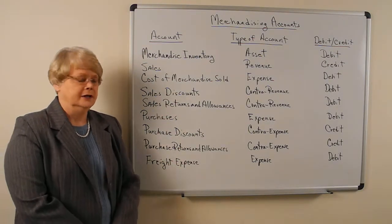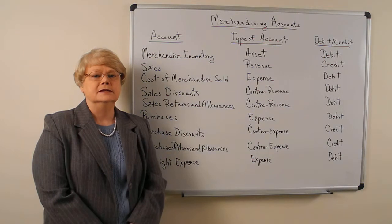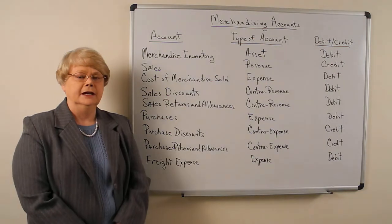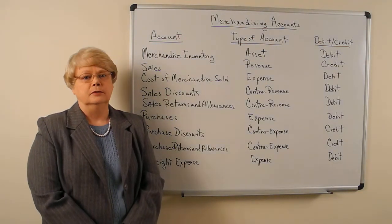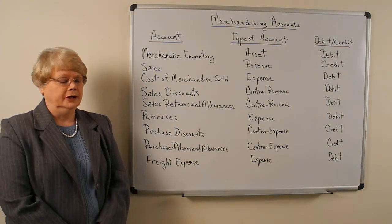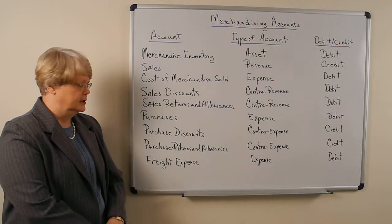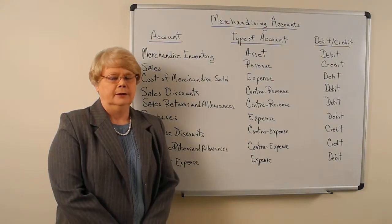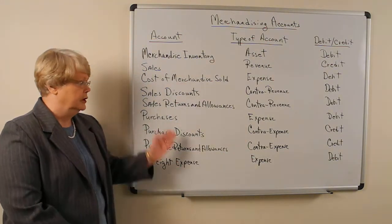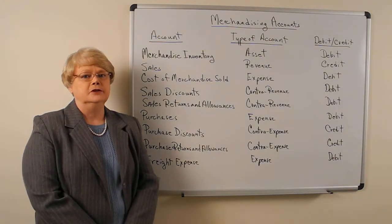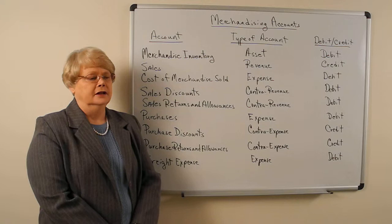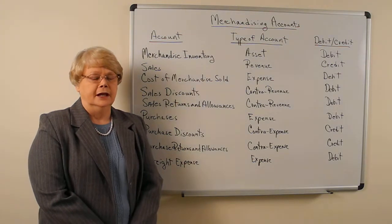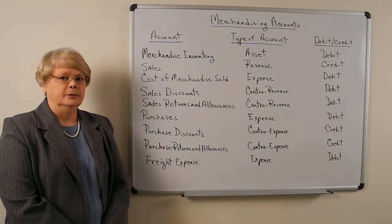Just like we have sales discounts, we have purchase discounts and purchase returns and allowances. But in this case, these are discounts that we as the customer are getting, and returns that we might make. Under a periodic system, we're going to use the purchase returns and purchase discounts accounts. These are contra expense accounts and they have normal credit balances. These accounts are not used under a perpetual system because under a perpetual system, all the purchases, returns, and anything else go through the inventory account. Therefore, the purchase returns and allowances and purchase discounts accounts are not used under a perpetual system.